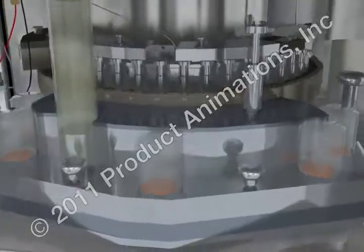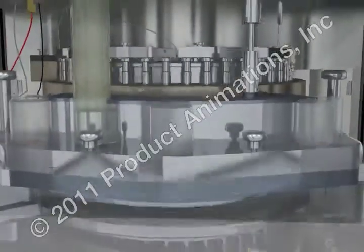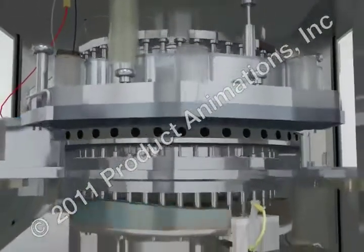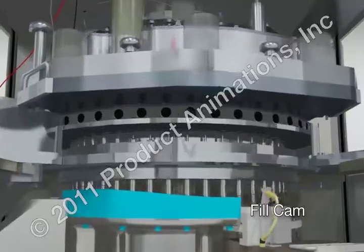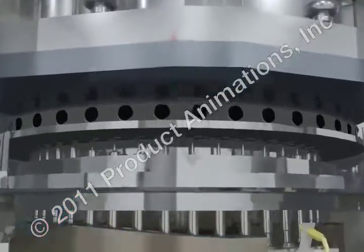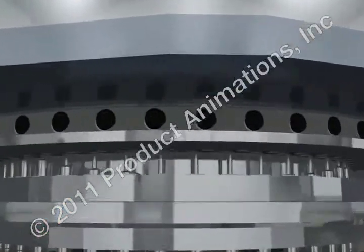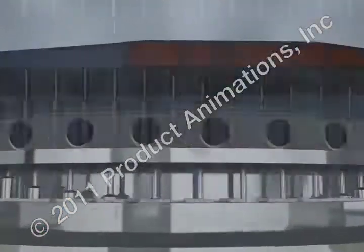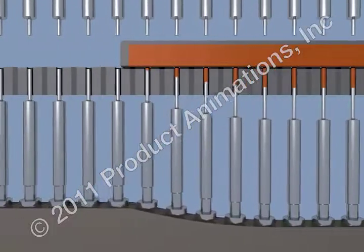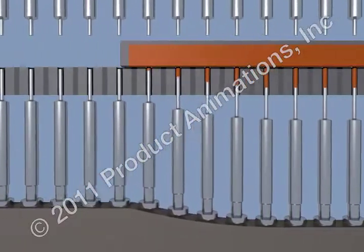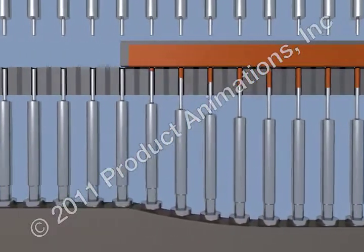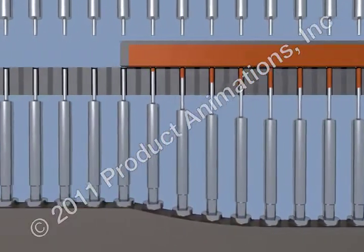As the turret is rotating, the lower punches are pulled down on the die by the fill cam when they pass under the feeder. This pull-down action causes the granulation in the feeder to be drawn into the die by the vacuum created.